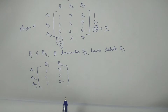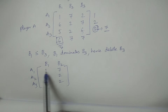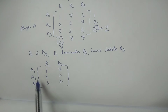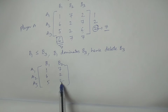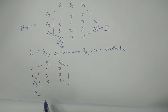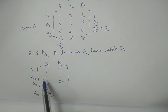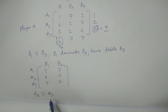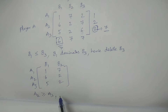Comparing A1 and A2: 6 greater than 2, less than 7. Then comparing A2 and A3: 6 greater than 5, and 2 equal to 2. All elements in A2 are greater than or equal to all elements in A3, so A2 dominates A3.